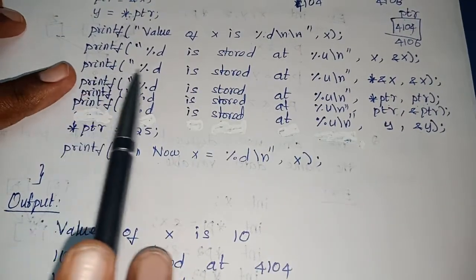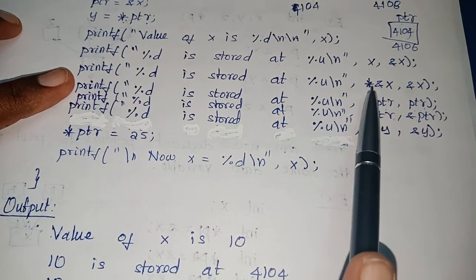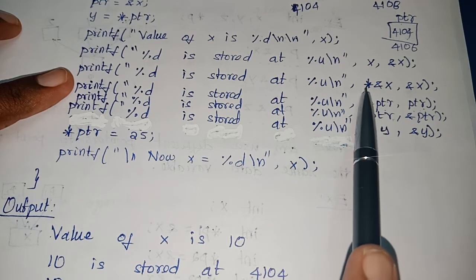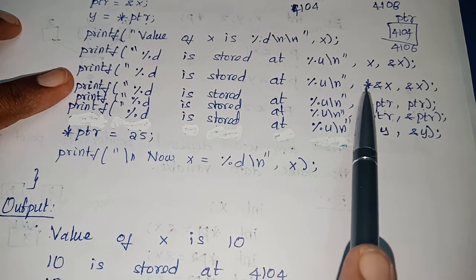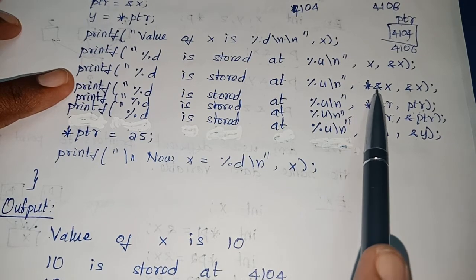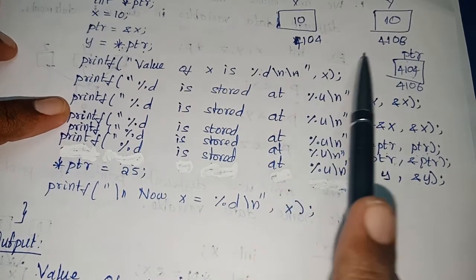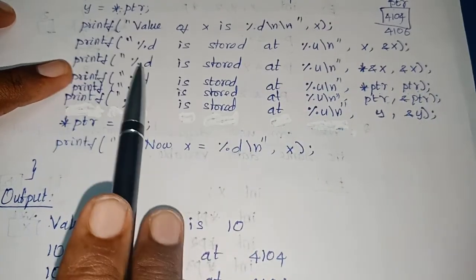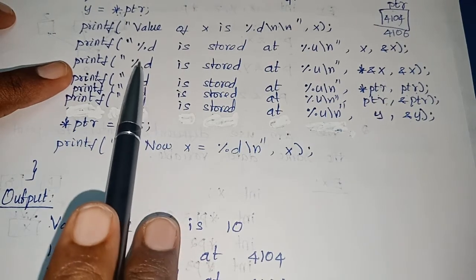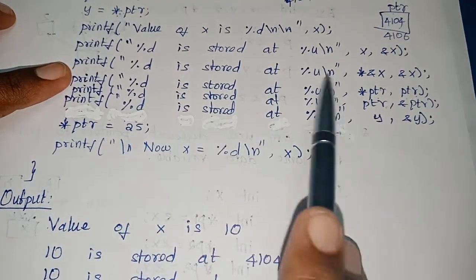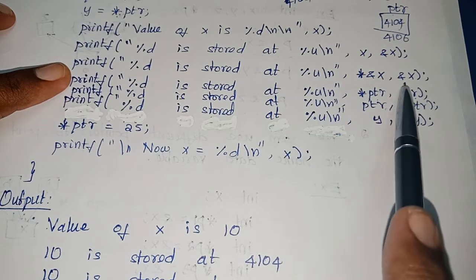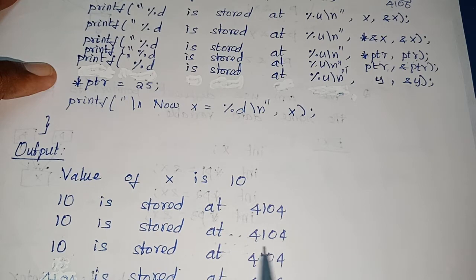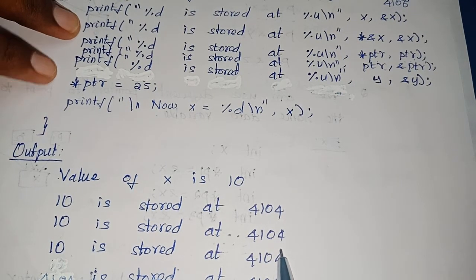The third printf statement: '*&quantity' — this address operator collects the address of x, which is 4104, and the dereferencing operator goes to that address and collects the value 10. So value 10 will be printed. The format is: '10 is stored at %u' with argument &x, so the address of x is 4104. Output: 10 is stored at 4104.